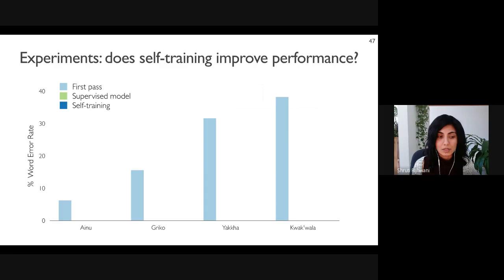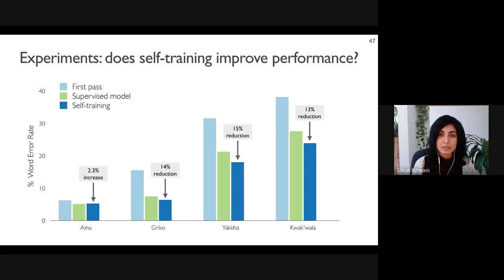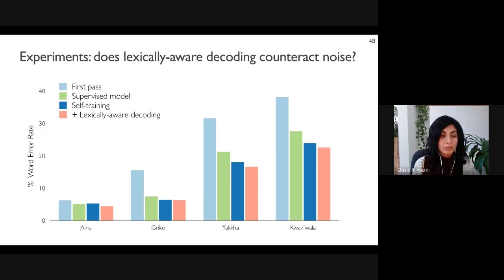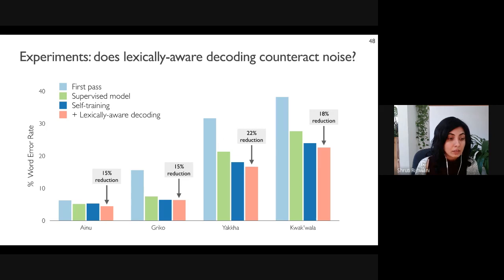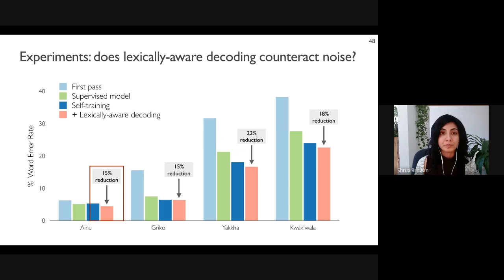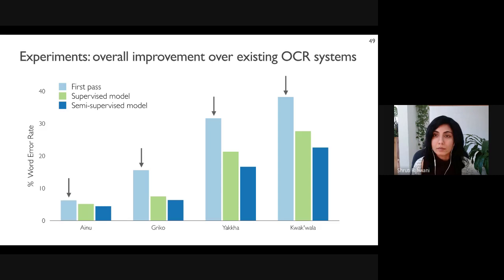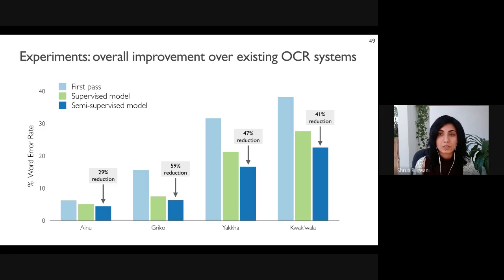In our experiments, comparing the semi-supervised learning method to the supervised model: the first-pass OCR word error rate and supervised model results confirm reductions in word error rate for all languages. Including self-training alone shows some improvement for Greco, Yakha, and Kwakwala, but word error rate gets slightly worse for Ainu, indicating that noise from self-training can sometimes overpower its general utility. However, when we add lexically-aware decoding combined with self-training, we get significant reductions in word error rate over the supervised model on all languages — especially notable for Ainu, where self-training alone hurt performance but lexically-aware decoding improved the word error rate by 15 percent.